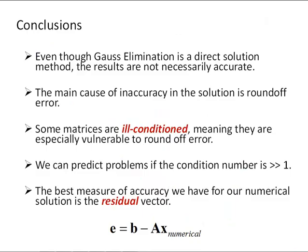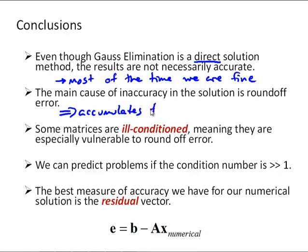So, one is, even though Gauss elimination is a direct solution method, the results are not necessarily accurate all of the time. But again, with the caveat, most of the time, we are fine. Most of the time, it's plenty accurate. Again, those double precision numbers are precise to 10 to the minus 16, so they're pretty accurate. The main cause of inaccuracy in the solution is roundoff error and when that accumulates. Again, because we have repeated additions and subtractions.